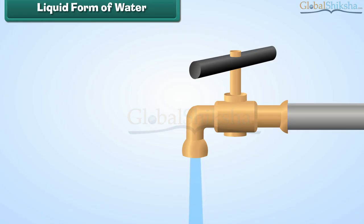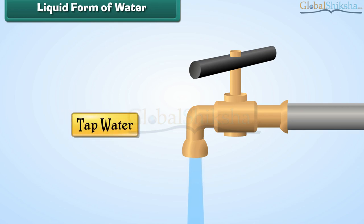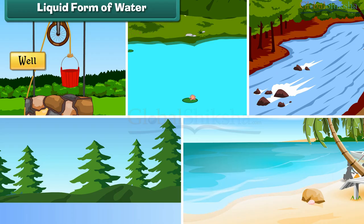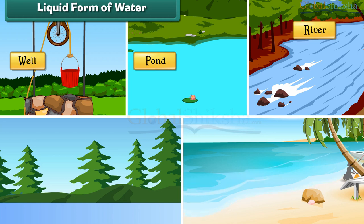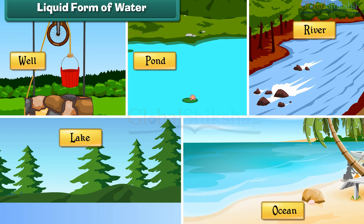The water we get from taps is in liquid form. Other examples of water in liquid form are water found in wells, ponds, rivers, lakes, and oceans.